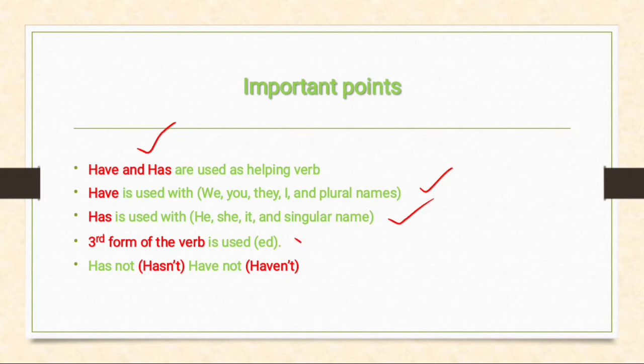The third form of the verb is used — it can end in 'ed', or it can be 'en', or even its own form. We use the third form of the verb. Its contracted forms are 'hasn't' (has not) and 'haven't' (have not).